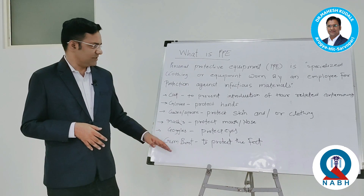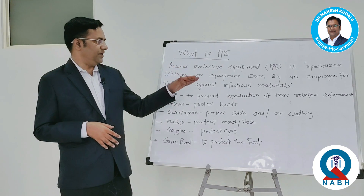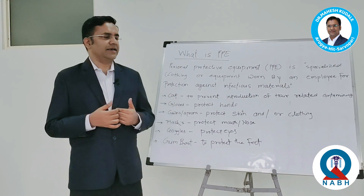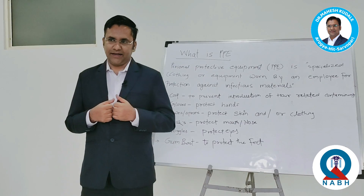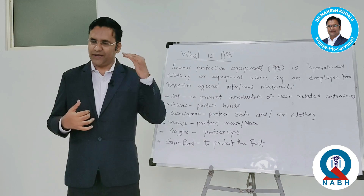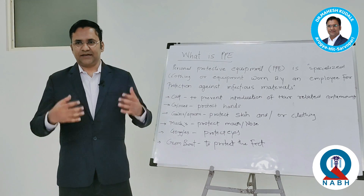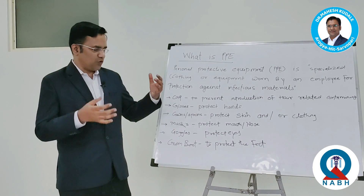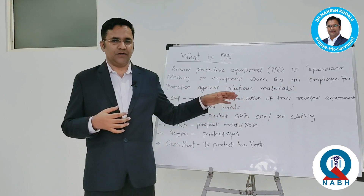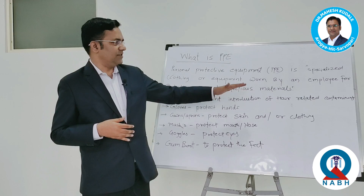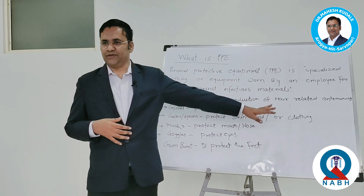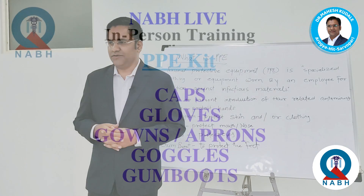तो इस वजह से हमें PPE kit है — यानि Personal Protective Equipment. यानि खुद को protect करना है, कोई भी बीमारी आपको ना हो. इसके लिए आपके पूरे body को top to bottom — यानि सर से लेके पैर तक cover करना है. और जिस चीज़ से cover करते हो — specialized gown, cap, mask — वो सारी चीज़ों को हम PPE बोलते हैं, Personal Protective Equipment. Thank you.